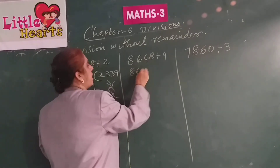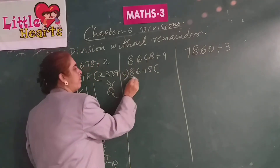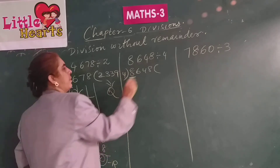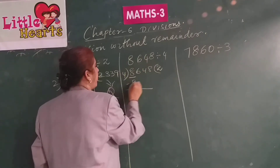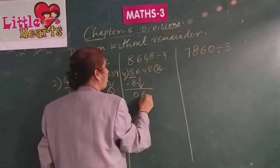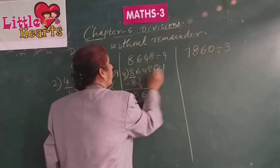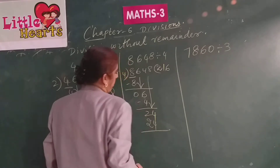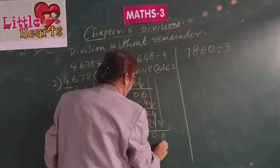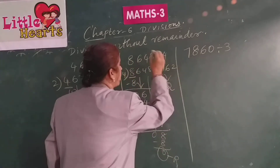Now 8648 divided by 4. As 8 is greater than 4, consider only 1 digit: 8. 4 twos are 8; 8 minus 8 is 0. Bring down 6: 4 ones are 4; 6 minus 4 is 2. Bring down 4 to get 24: 4 sixes are 24; 24 minus 24 is 0. Bring down 8: 4 twos are 8; 8 minus 8 is 0. The remainder is 0 and the quotient is 2162.